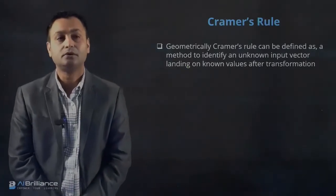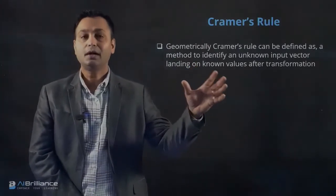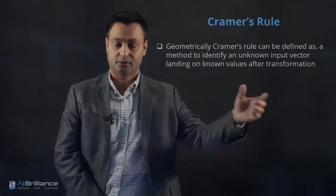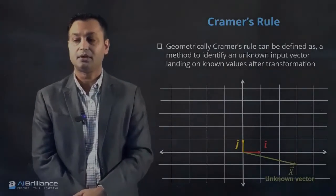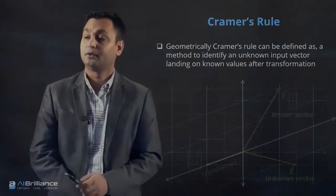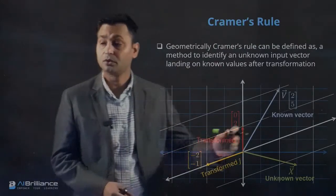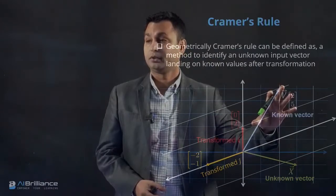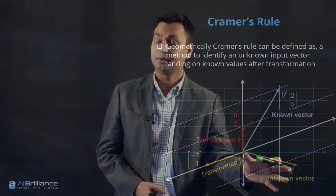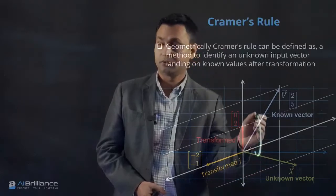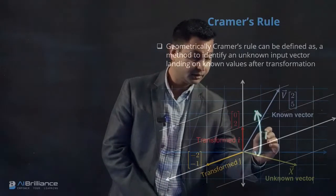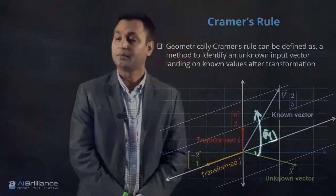Geometrically, Cramer's rule can be defined as a method to identify an unknown input vector landing on known values after the transformation. We have this unknown vector, and after transforming it by a matrix, it should rotate and land — getting converted into this known vector. This transformation is done by the matrix we have.